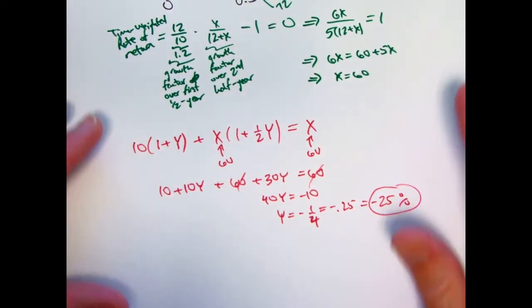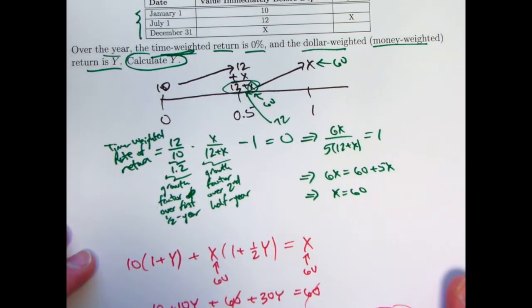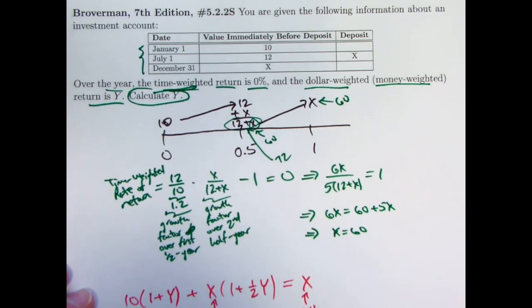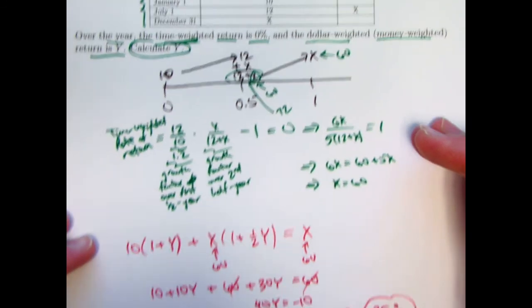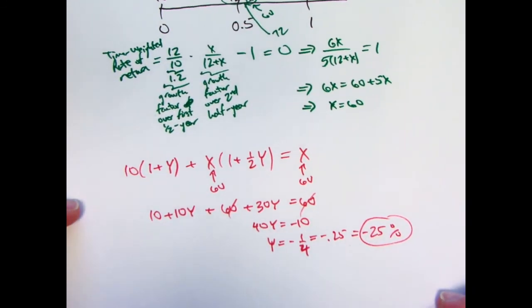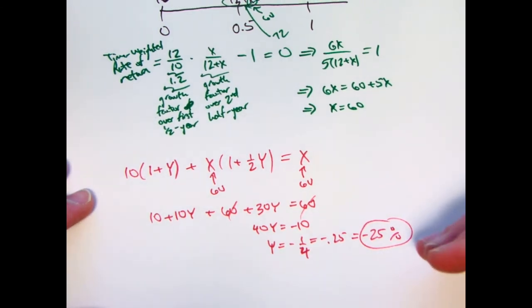Okay, so it is a pretty quick problem. You can look over here. There was the givens up there. Find the time-weighted rate of return in terms of x, solve for x, and then plug that in to find the ultimate dollar-weighted rate of return. In this case, the time-weighted rate of return is 0%, but the dollar-weighted or money-weighted rate of return is negative.